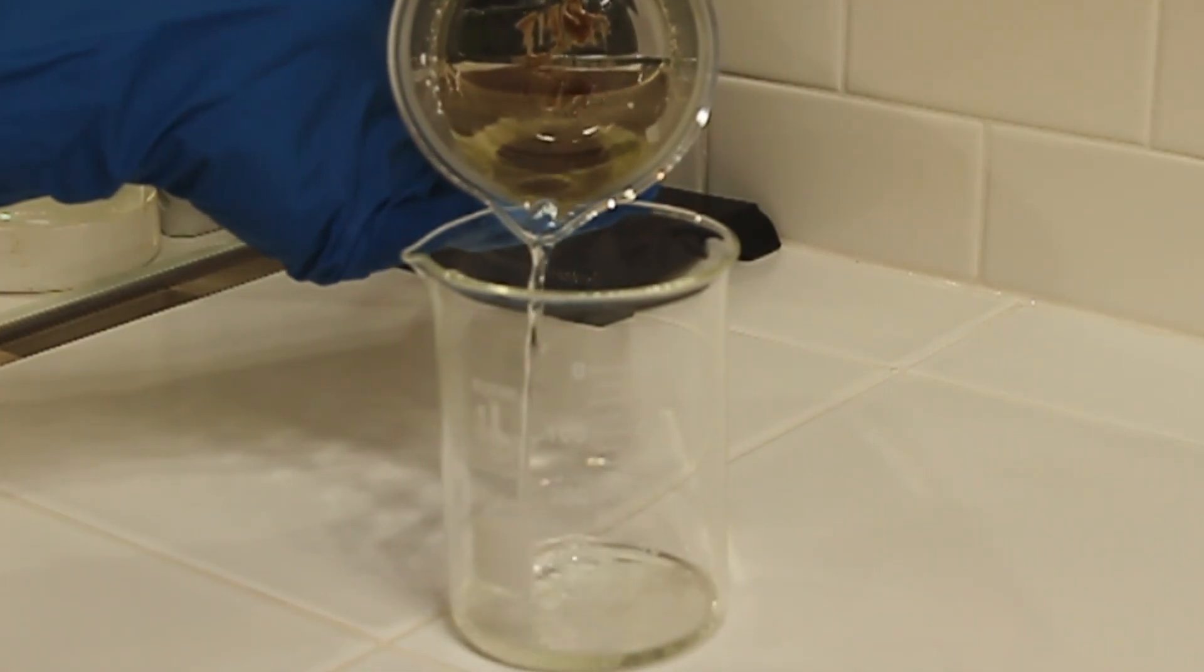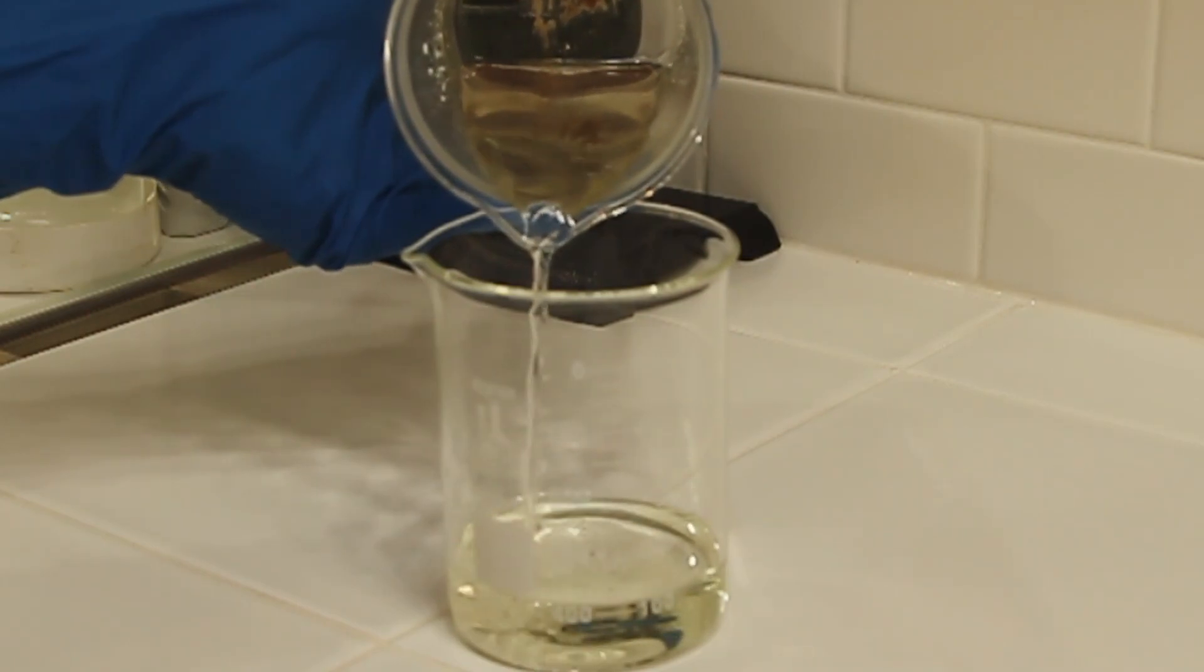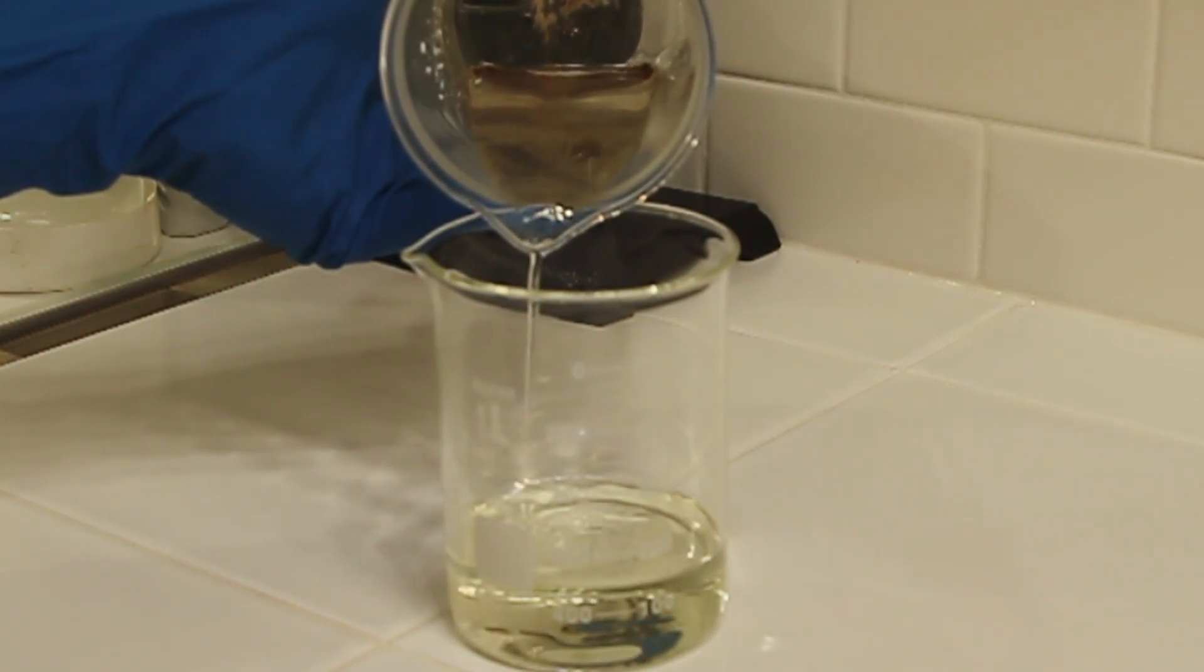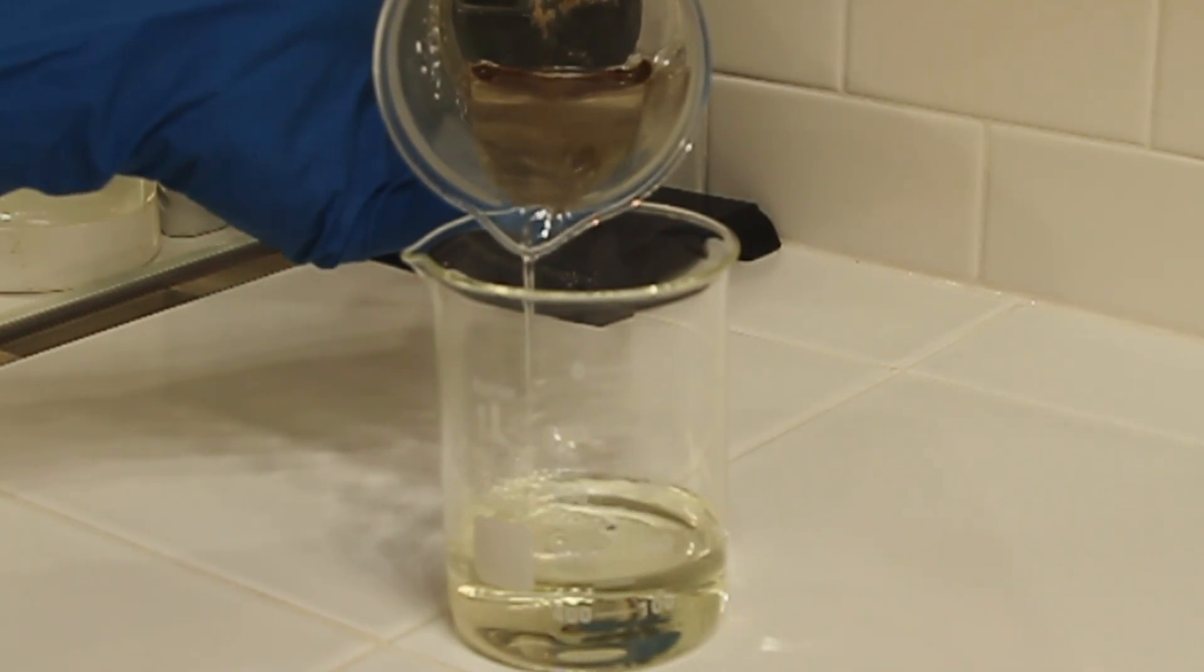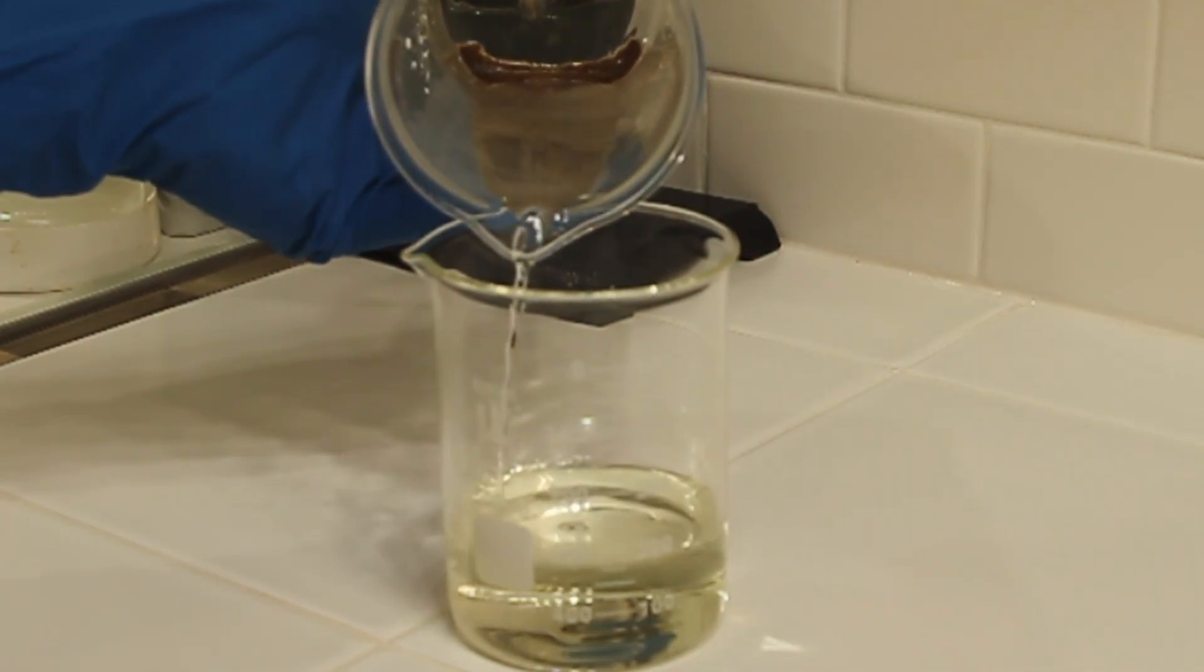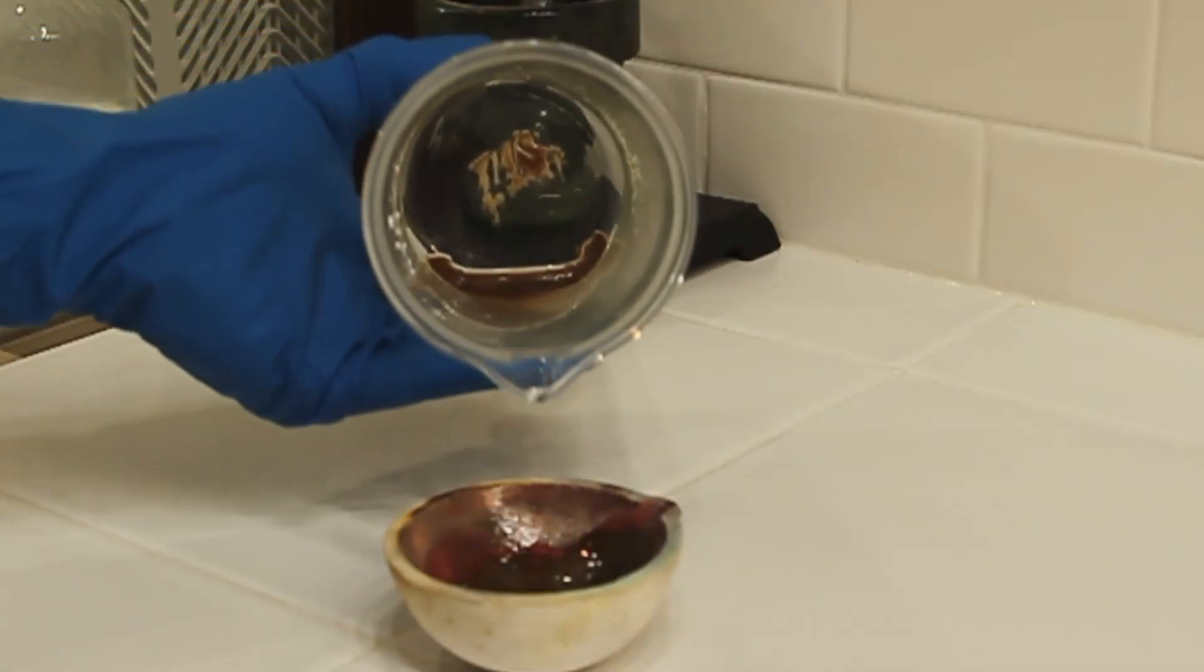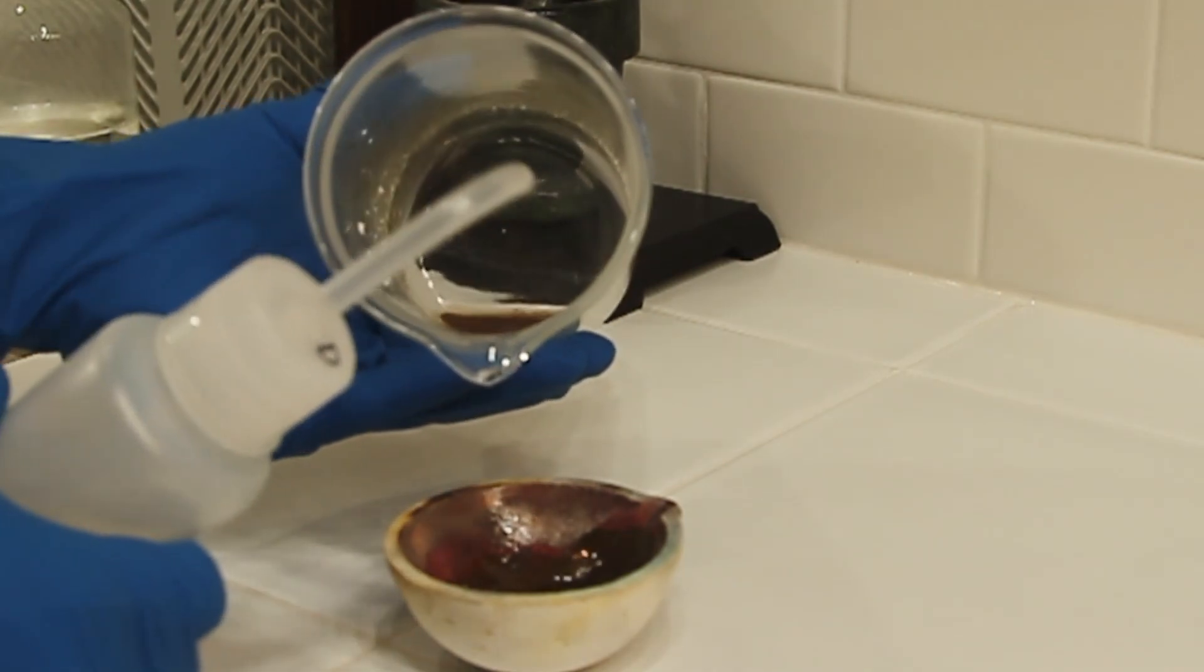So now we're going to pour off the excess. I'll just pour this off kind of slow so we don't get too much of the gold transferred over into the dish here. Once we get this poured off, then we're going to take the solids out and transfer those into a crucible.